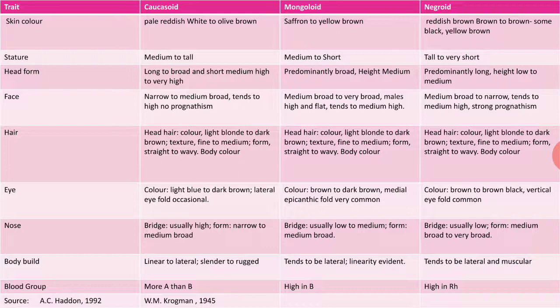Regarding head form: Caucasoid have long to broad and short, medium to very high heads; Mongoloid, predominantly broad and high medium; Negroid, predominantly long with low to medium height. For the face: Caucasoid are narrow to medium broad, with a trend to high and no prognathism; Mongoloid, medium broad to very broad, high and flat; Negroid, medium broad to narrow with strong prognathism — that is the projection of the teeth in the face.